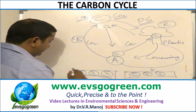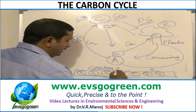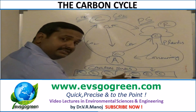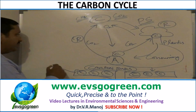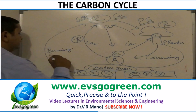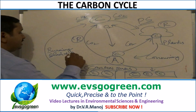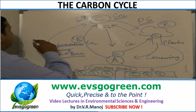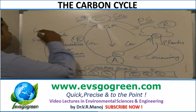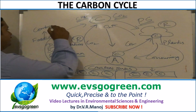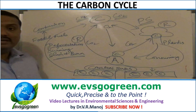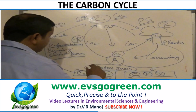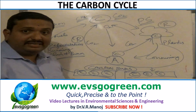Microorganisms assist in decomposition. The carbon gets locked up in the soil and in the oceans — these are called carbon sinks and they are not supposed to come out. But due to human activities such as slash-and-burn agriculture, deforestation, and burning fossil fuels through combustion, carbon is returned to the atmosphere, which is generally not supposed to happen.